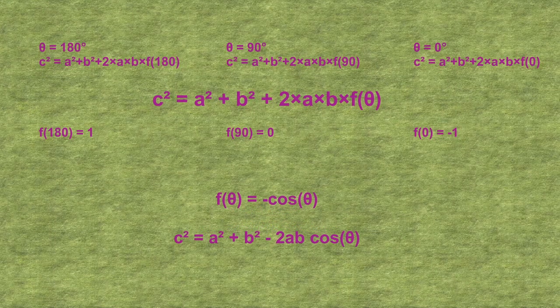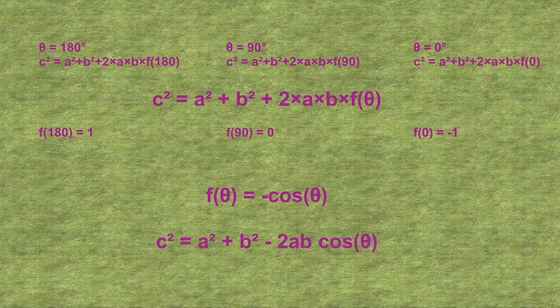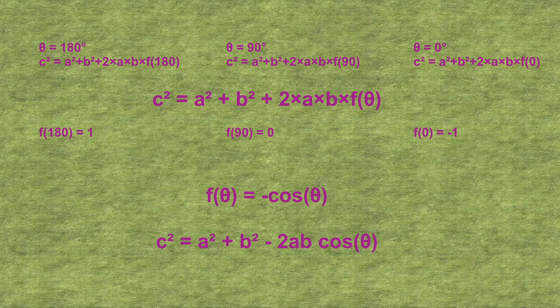Note that we have not proven the formula yet. We've merely shown that this formula works for our three special cases. The aim was to understand the formula visually. But any function that goes through those three points on the cosine graph would also pass the test up to now.